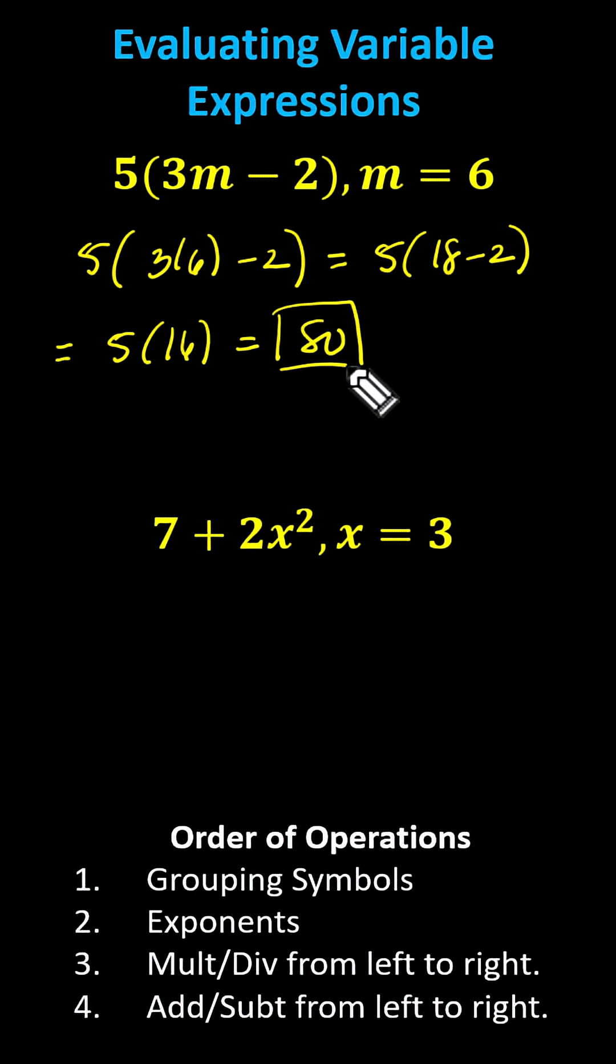Next we have seven plus two x squared, and we're given x equals three. We begin by substituting three for x, giving us the expression seven plus two times the square of three.